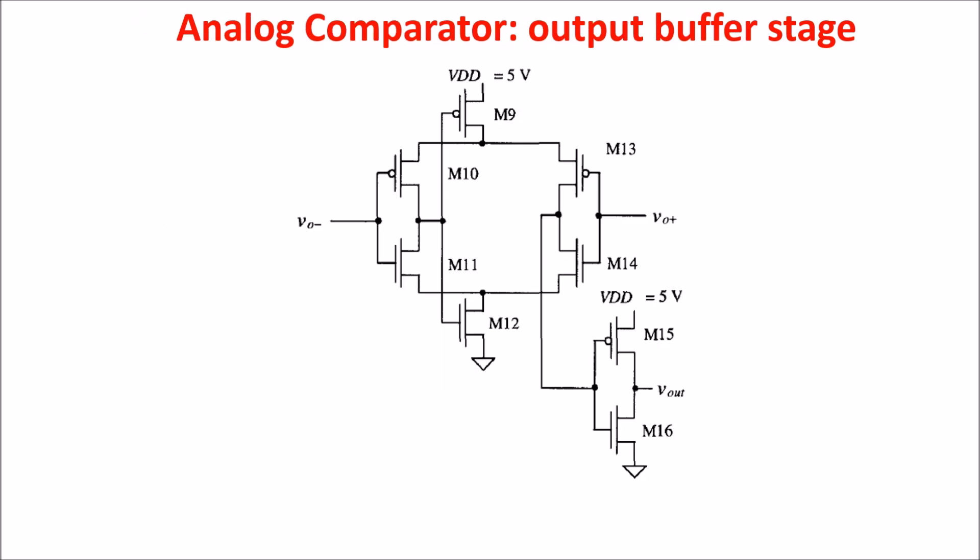The final component in our comparator design is the output buffer. The main purpose of the output buffer is to convert the output of the decision circuit into a logic signal, 0 volt or 5 volt. This circuit is a self-biasing differential amplifier. An inverter was added on the output of the amplifier as an additional gain stage, and to isolate any load capacitance from the self-biasing differential amplifier. Now let's say how the circuit works. Let's say that VO plus is at high voltage and VO minus is at zero, so that M14 and M10 are on and M11 and M13 are off. In this case, M12 is on and being M14 on, we have a zero on the input of the final inverter, so that Vout is at 5 volt.